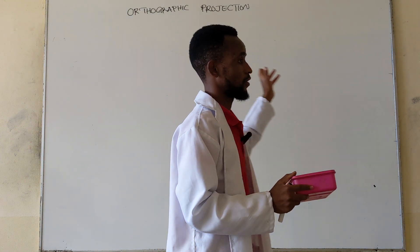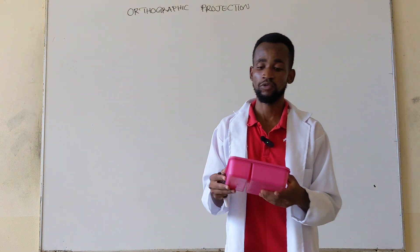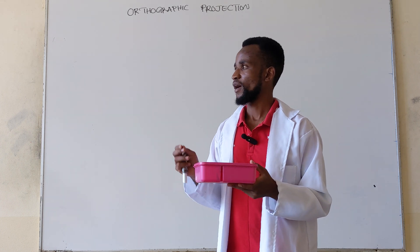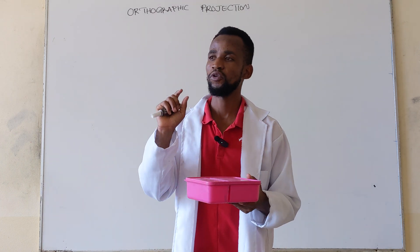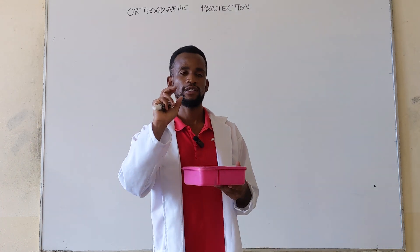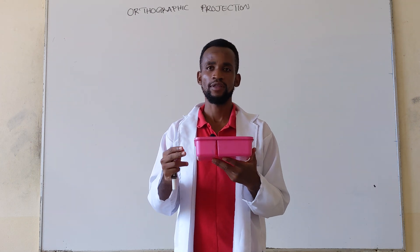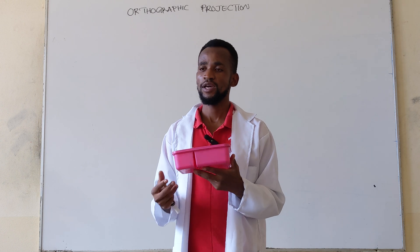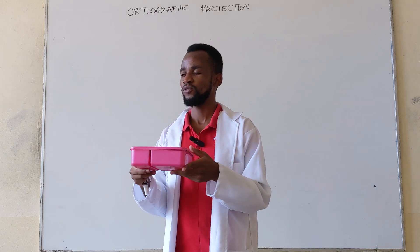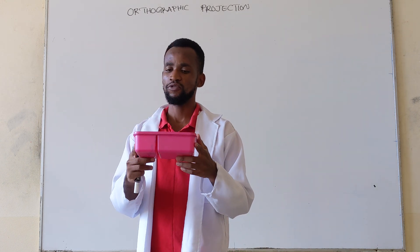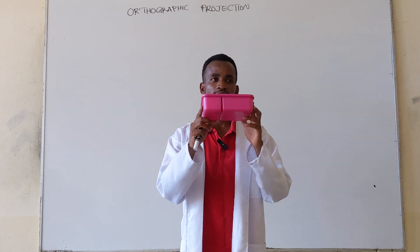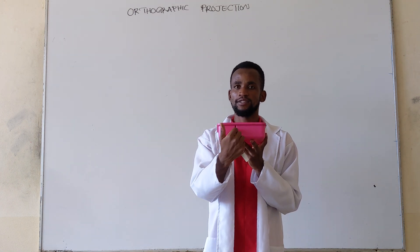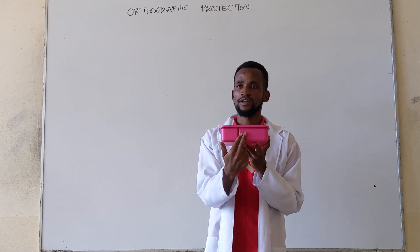When you consider the orthographic views or the orthographic projection, those views are viewed from a point where your side is at right angle with the view that you are viewing or the side that you are viewing. For example, if you want to get the orthographic front view of this object, you have to place yourself at a point where your side is at 90 degrees with the view itself.